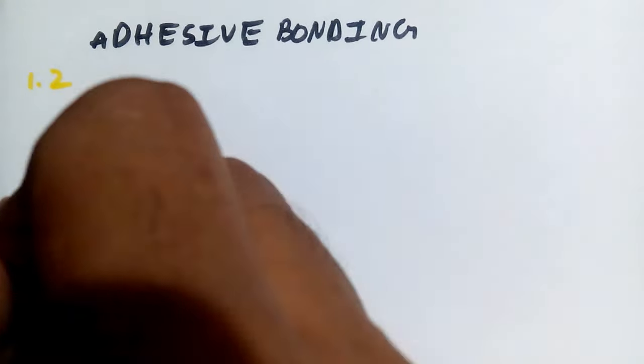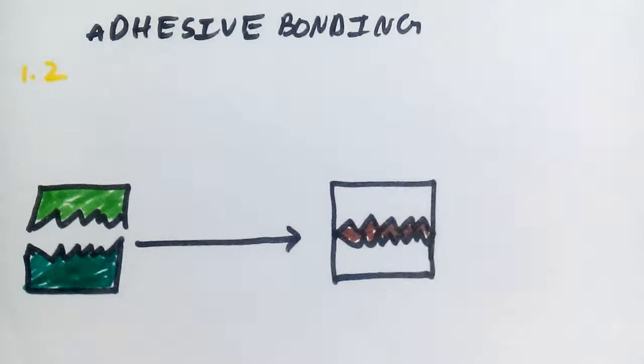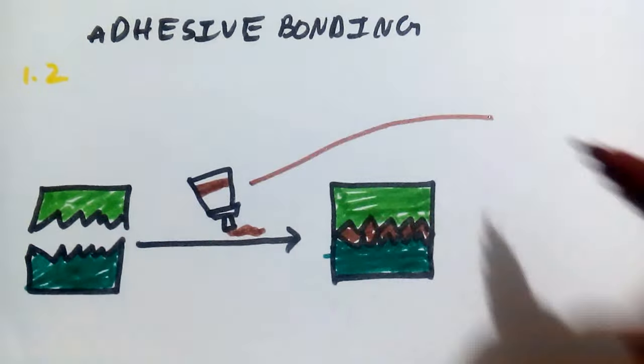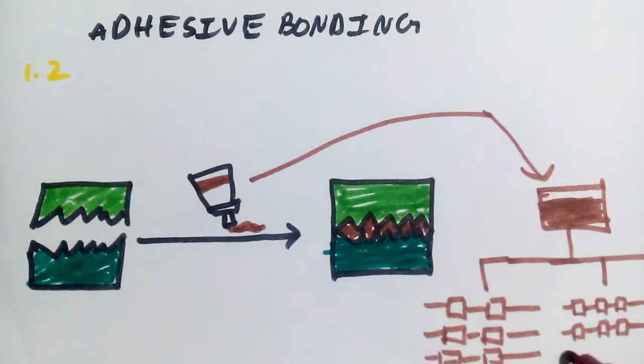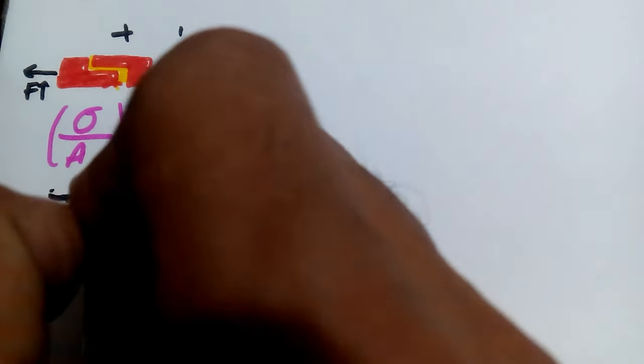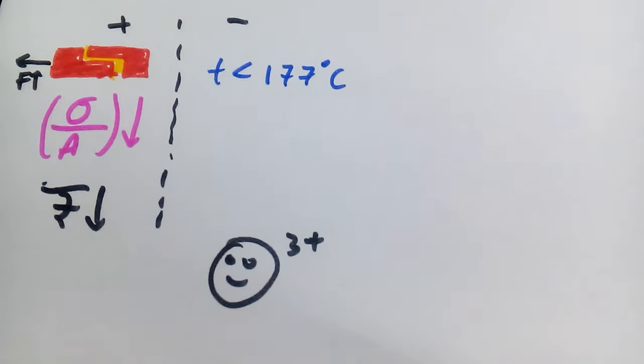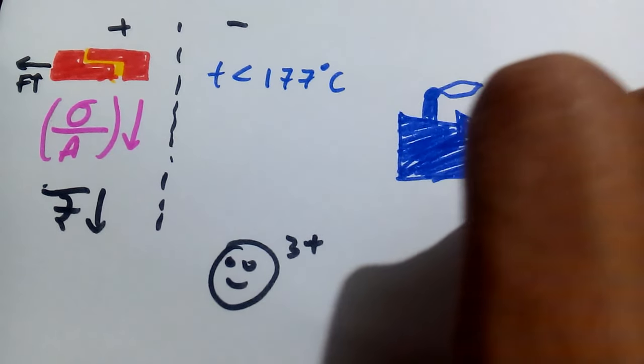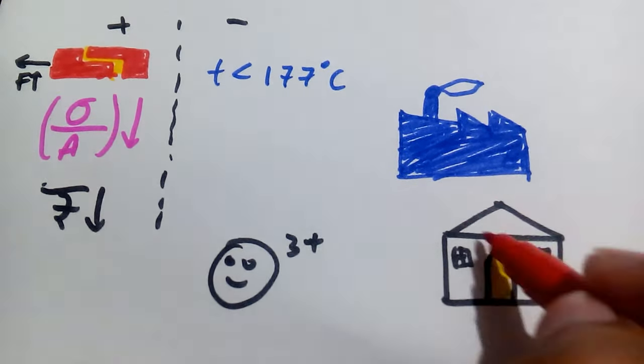The second type of joining process is adhesive bonding which is the process of joining materials by using adhesives. The adhesives used are mainly thermoplastic or thermosetting adhesives. Advantages include high joint strength, less localized stress concentration and low cost but is limited to temperature below 177 degrees celsius. Due to its ease of use it is used primarily in all industrial and domestic applications.